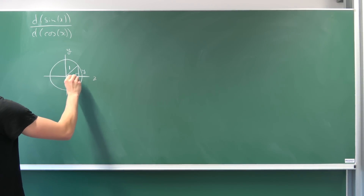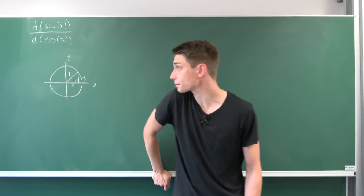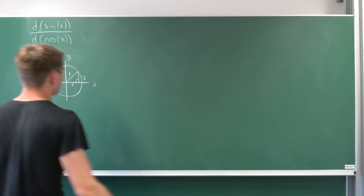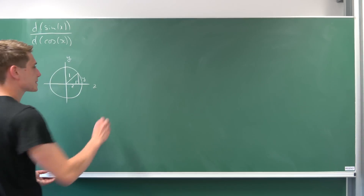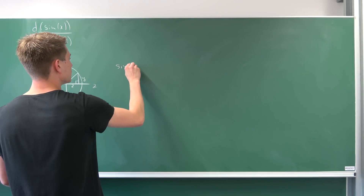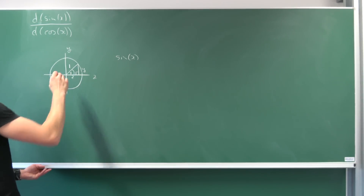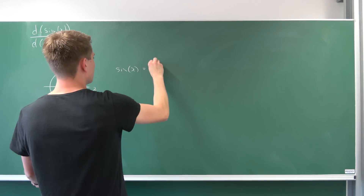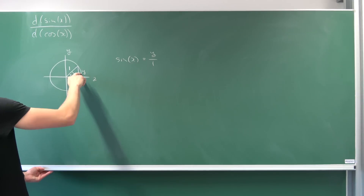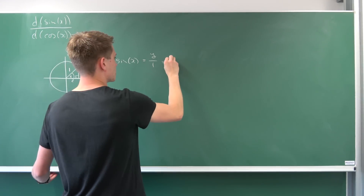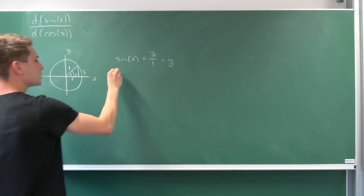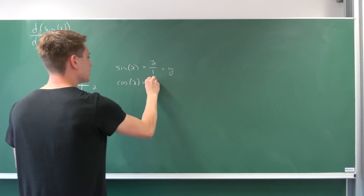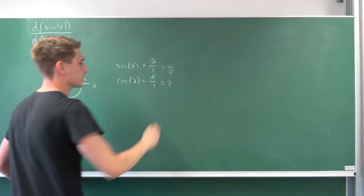We are working with a right triangle, so we can identify some things. For example, the sine of x — where the angle x is here — sine of x is nothing but y over 1, opposite over hypotenuse, which is just y. And cosine of x is nothing but z over 1, adjacent over hypotenuse, which is just z.